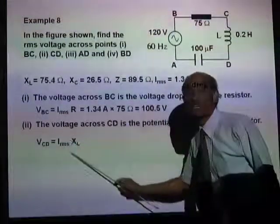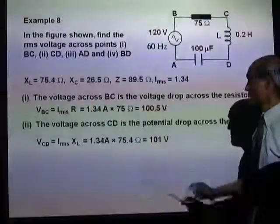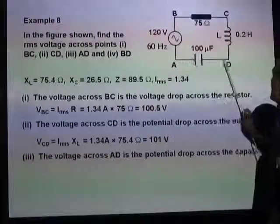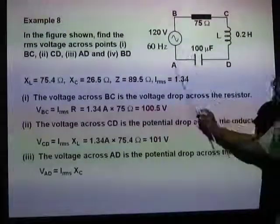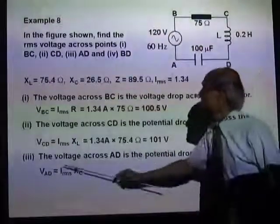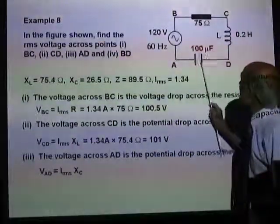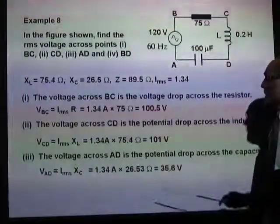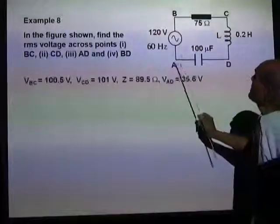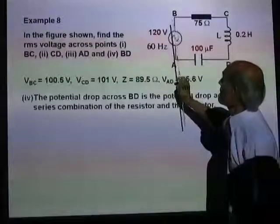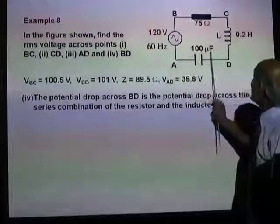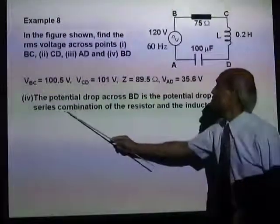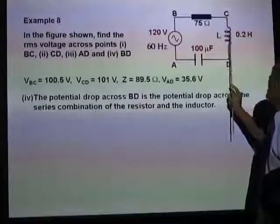We have those values. Similarly, the voltage across AD is the potential drop across the capacitor: VAD equals IRMS times the reactance of the capacitor. We have all those values. And finally, the potential drop across BD is the potential drop across a series combination of the resistor and the inductor.